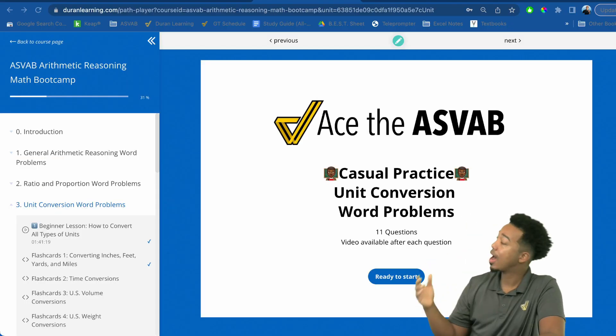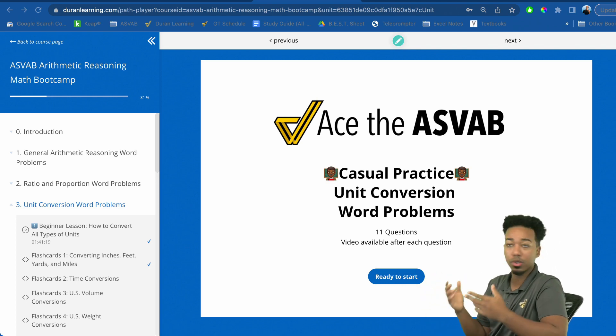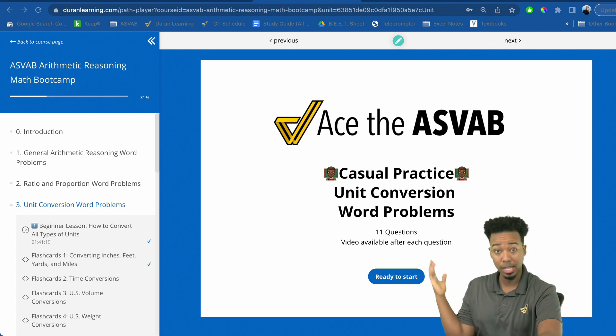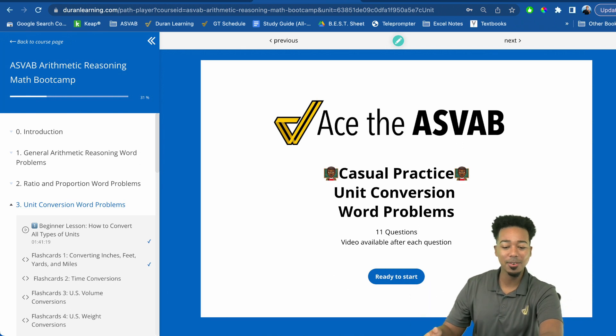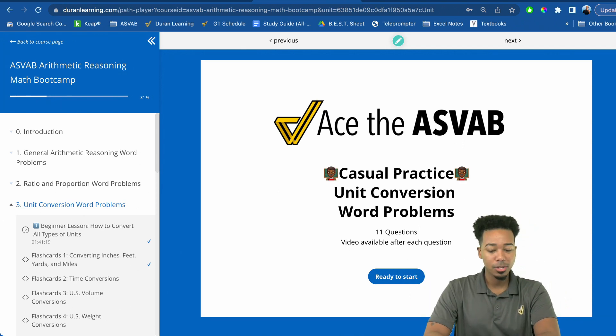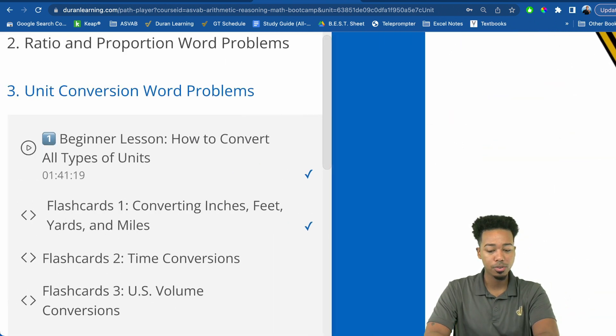I want to make sure that you understand that if you're in my program, you have everything you need to practice this the right way. So right behind me, you're going to see part of the course that you get for the arithmetic reasoning for the ASVAB. And the awesome thing about this is that this is a section for unit conversions. That's what this problem is about.